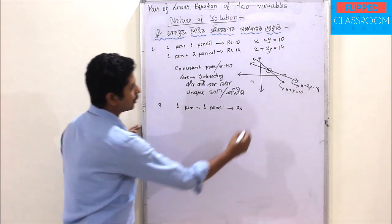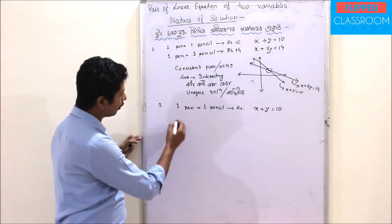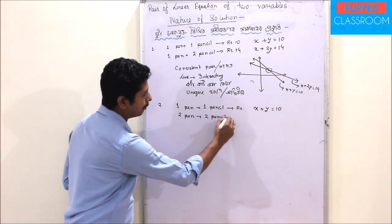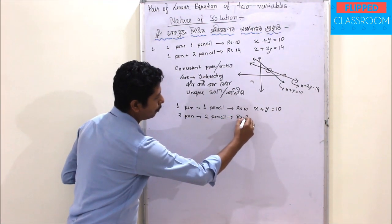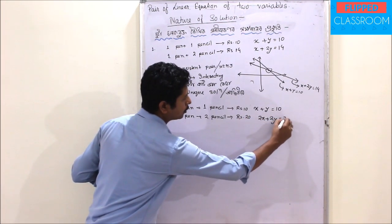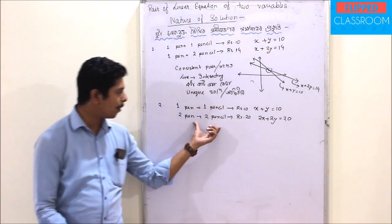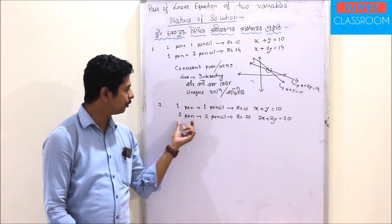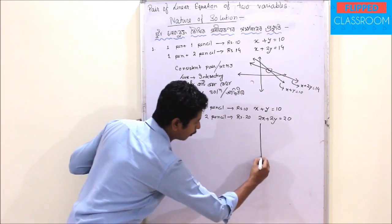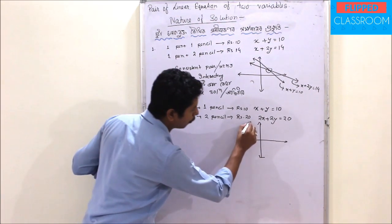The equation is x plus y is equal to 10. We will give you one example. We need to express the graph — we can express how to do the graph. A graph — we can draw a graph.